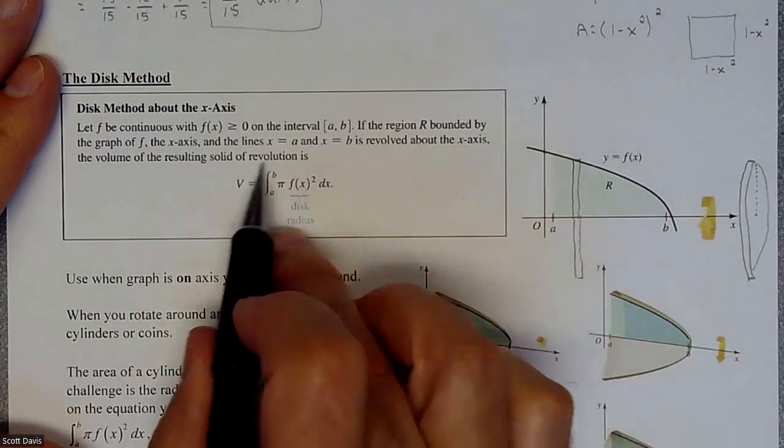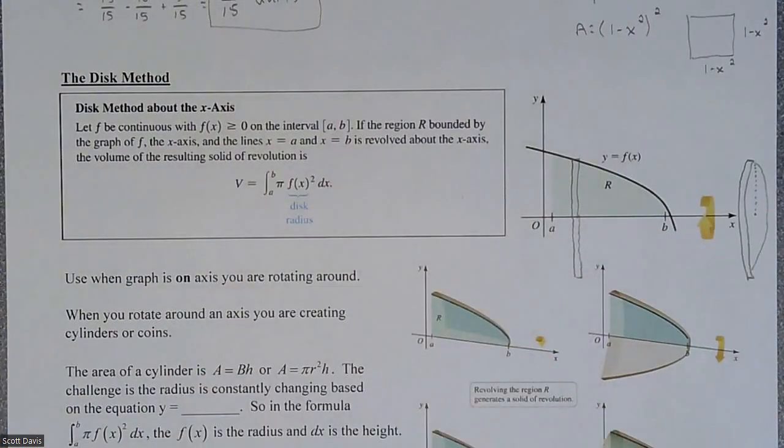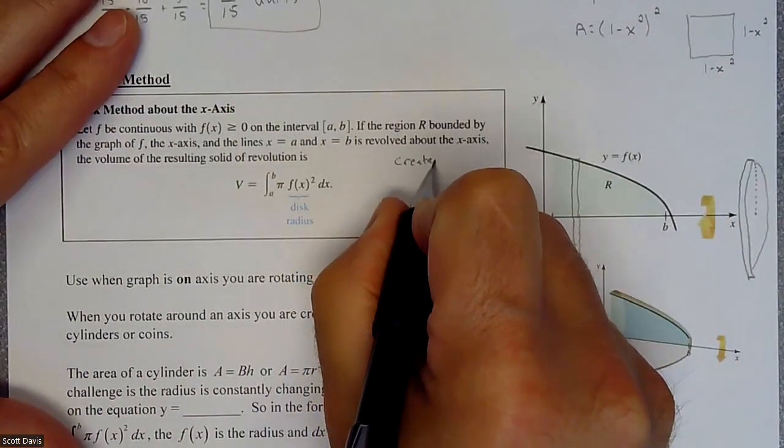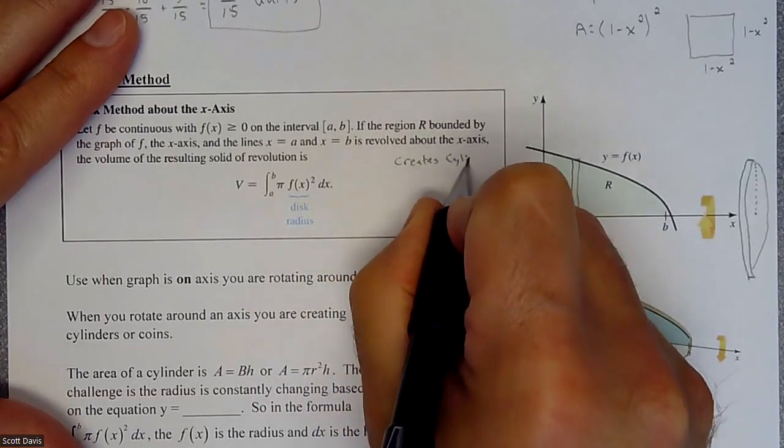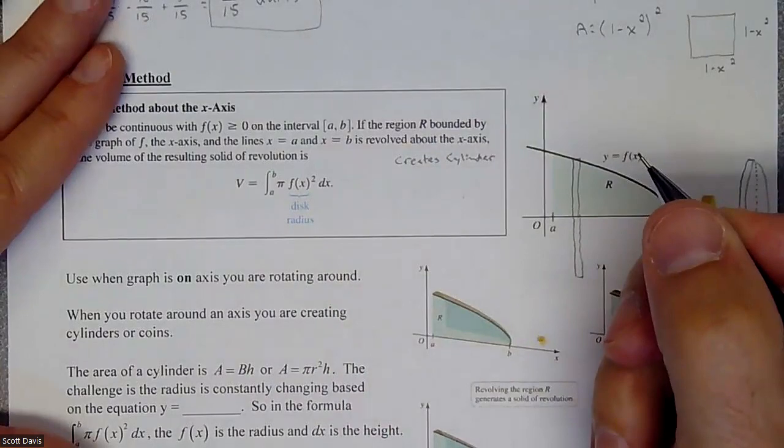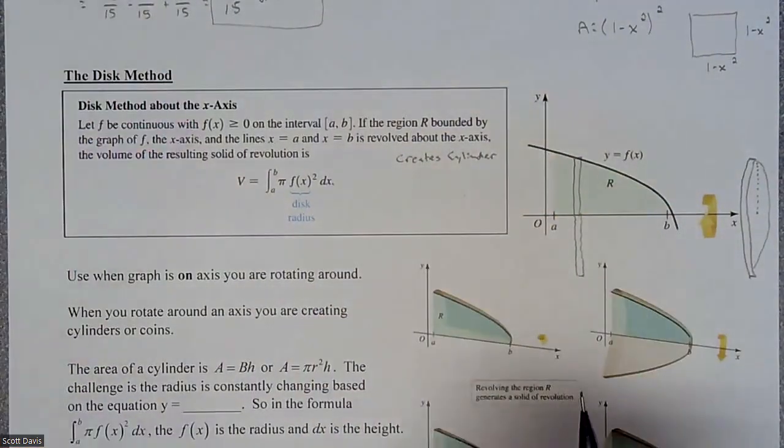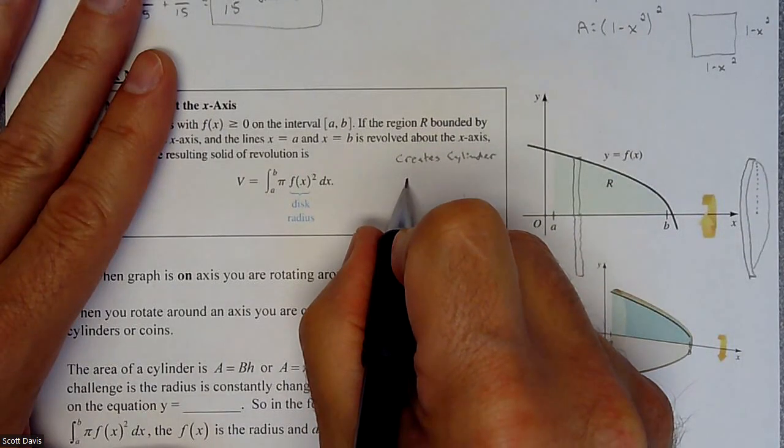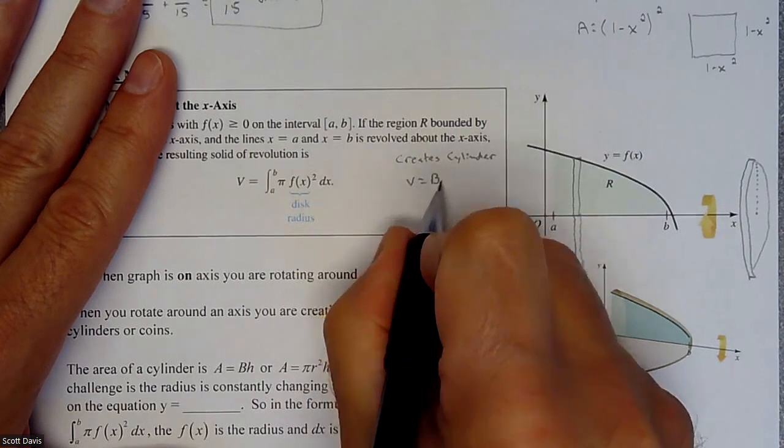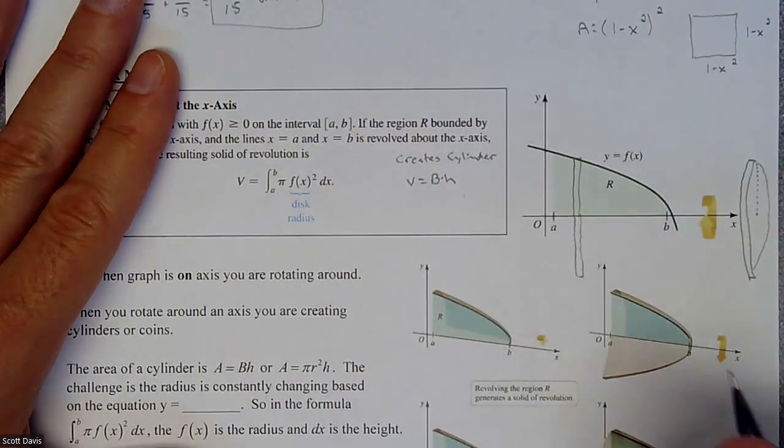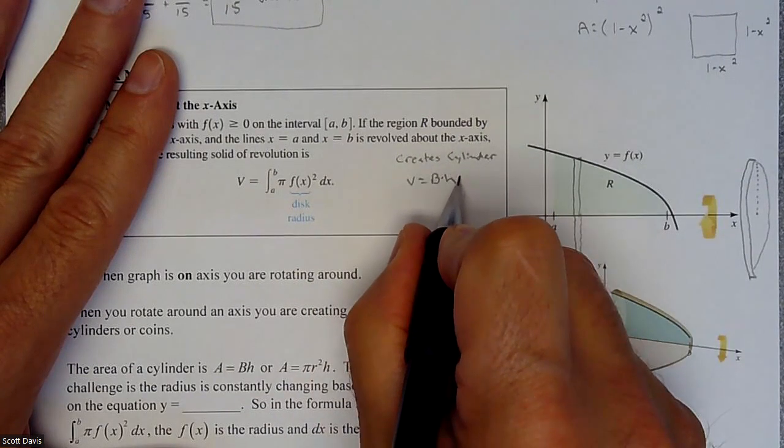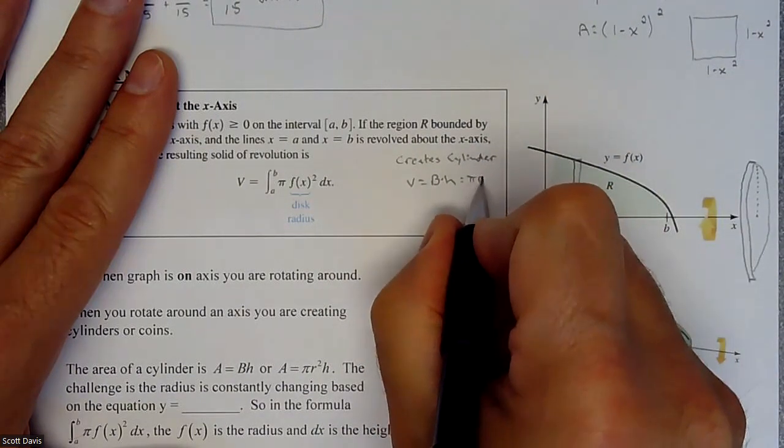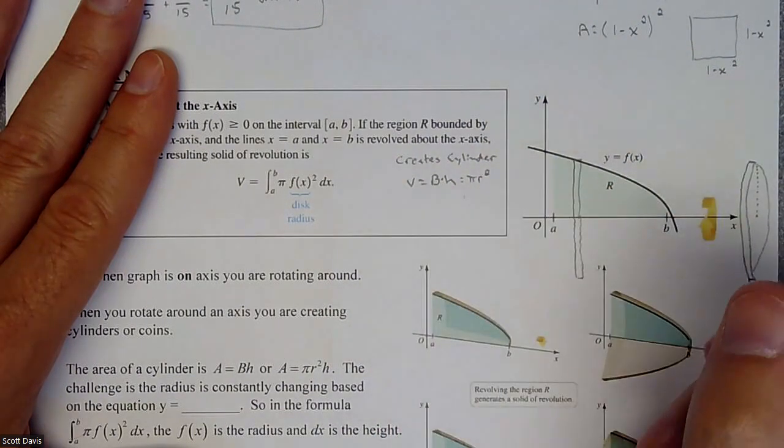This formula looks like this, but why does it look like this? There's a legitimate reason. We're creating cylinders. If you remember how to find the volume of a cylinder, our volume is the area of the base times the height. Our area of the base is circular, so that base is going to be πr² times the height.